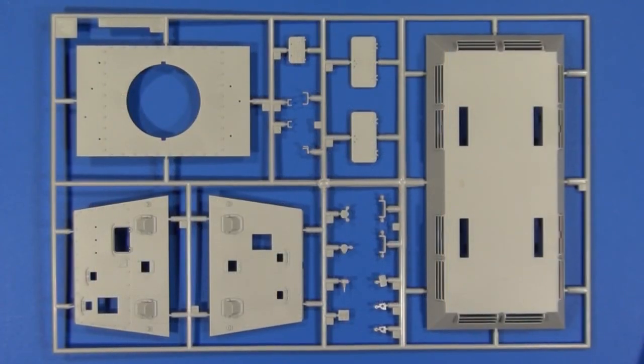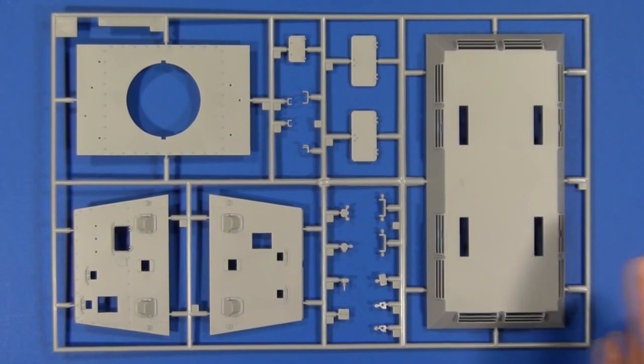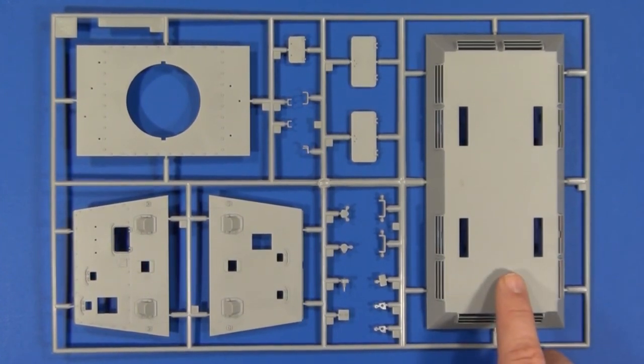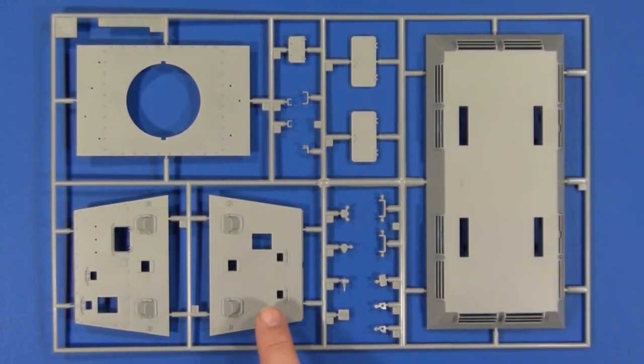This is sprue A. Some of the major components are the lower superstructure half, rear plate, front plate, and top plate with turret ring.